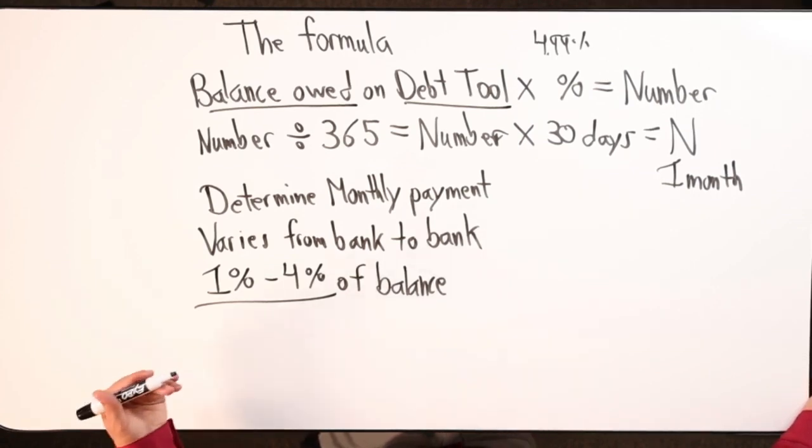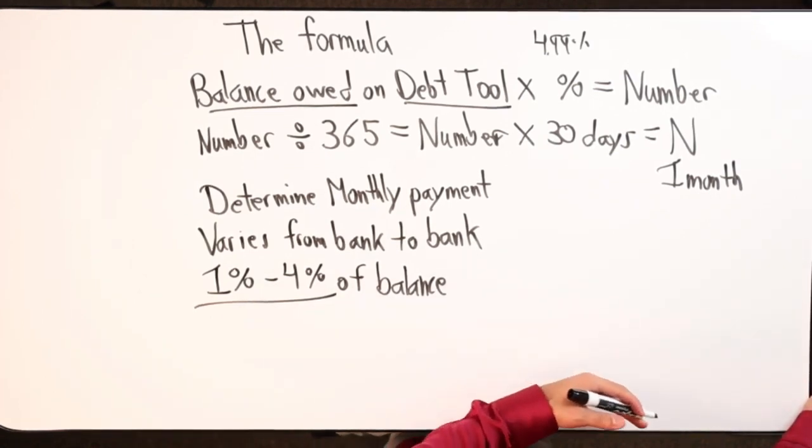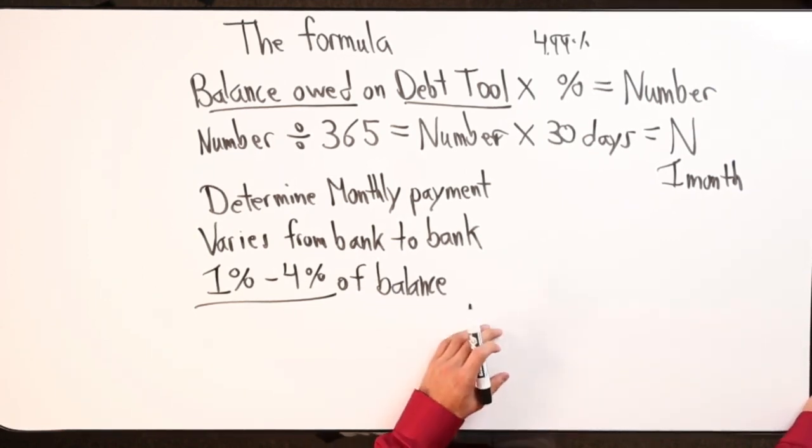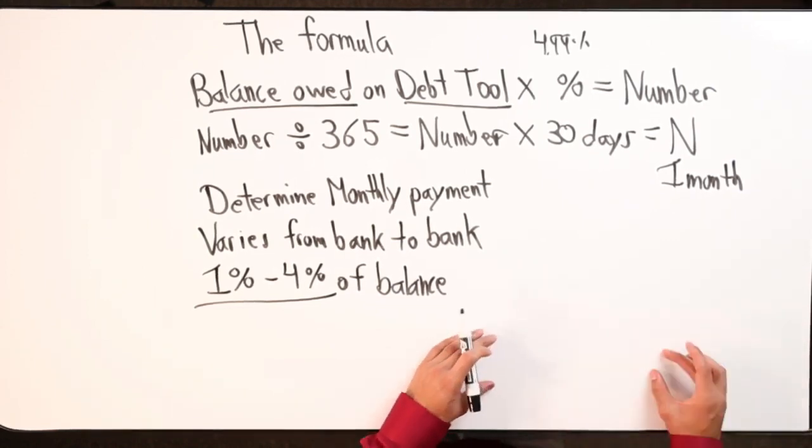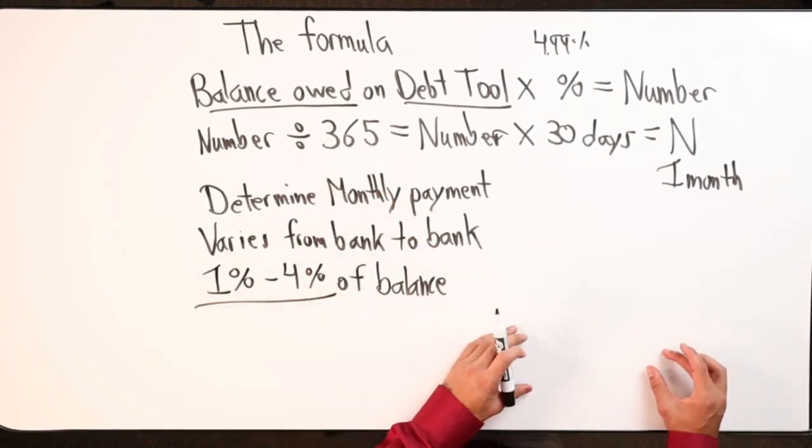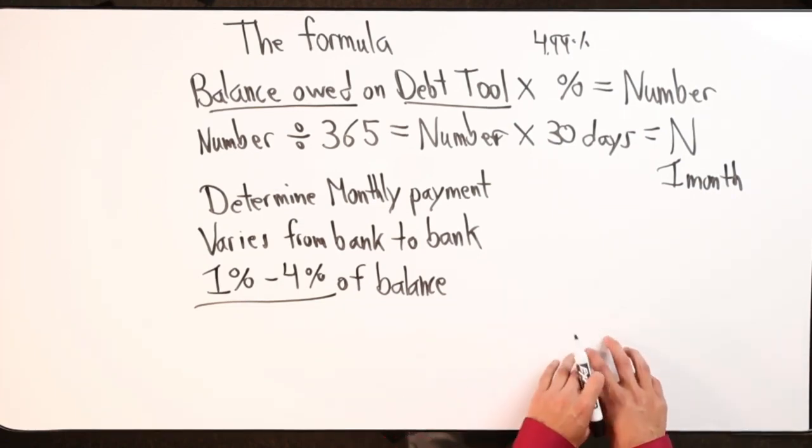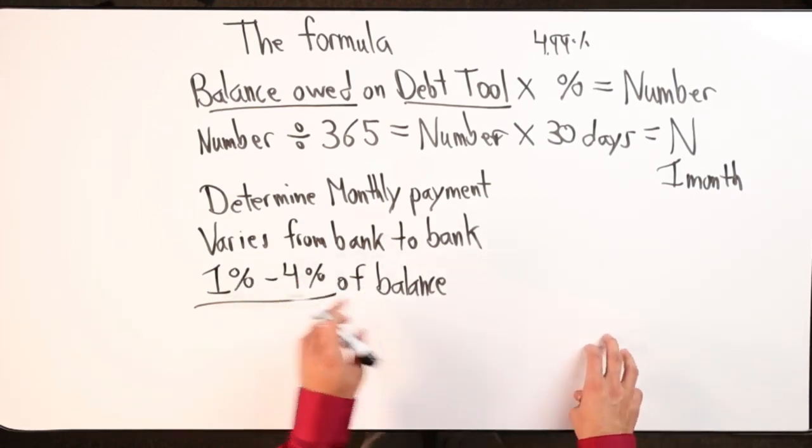Obviously, if we're doing velocity banking, you take out the money, you start putting it back in. By the time the statement balance comes out, that statement balance will typically be a lower number than what you actually owed. Then your monthly minimum payment will be based off the statement balance.